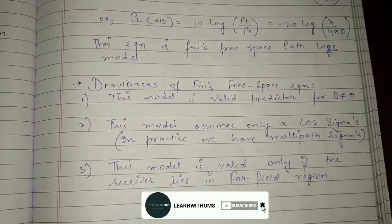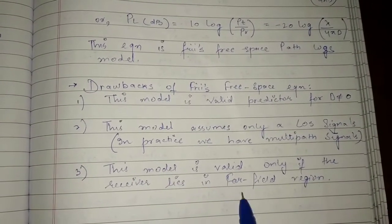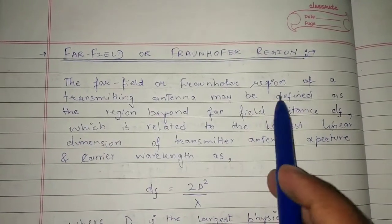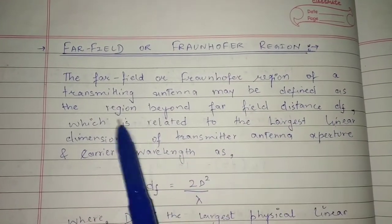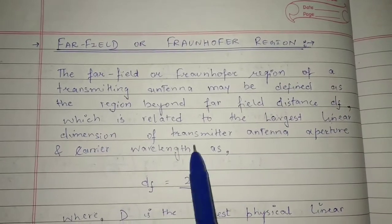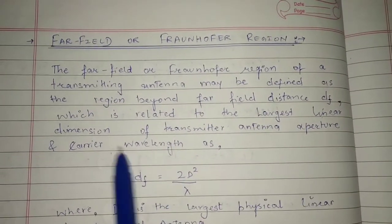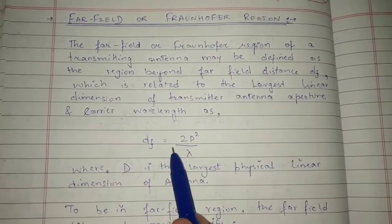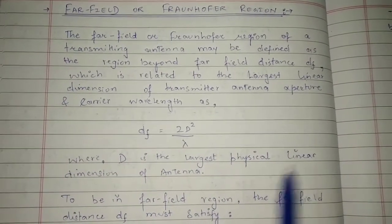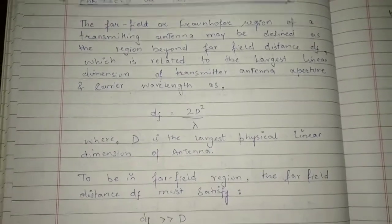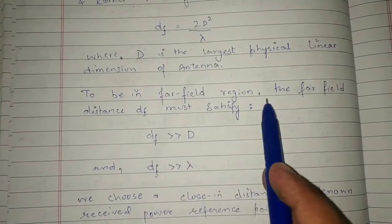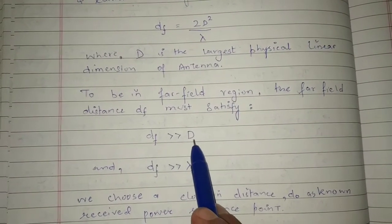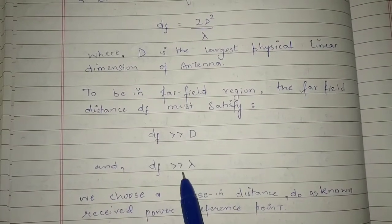Third, this model is valid only if the receiver lies in the far field region. The far field or Fraunhofer region of a transmitting antenna is defined as the region beyond the far field distance DF, which is related to the largest linear dimension of the transmitter antenna aperture: DF = 2D² / λ, where D is the largest physical linear dimension of the antenna. To be in the far field region, DF must be much greater than D and much greater than the wavelength λ.